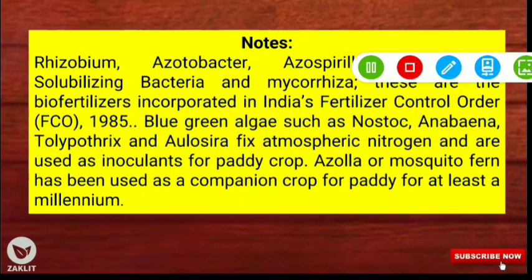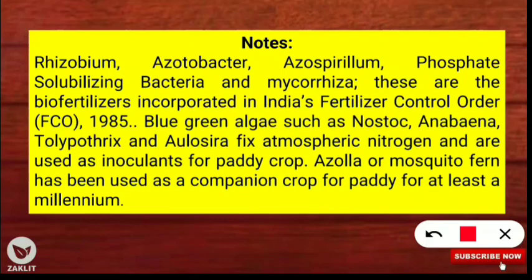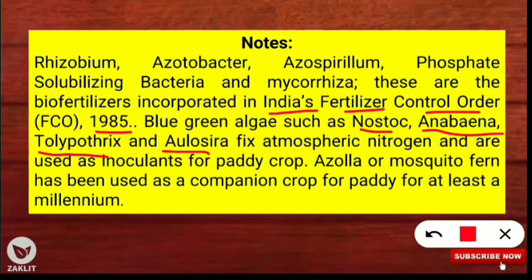Bio-fertilizers are very important for plant production and their yield. These bio-fertilizers are incorporated in India's Fertilizer Control Order (FCO) in 1985. Blue-green algae such as Nostoc, Anabaena, Tolypothrix, and Aulosira fix atmospheric nitrogen. These are used as inoculants for the paddy crop — that means for rice crops — so they are bio-fertilizers, along with Azolla.